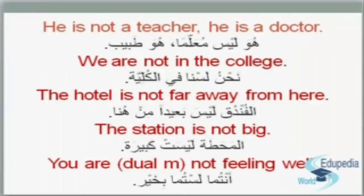Now let's see some sentences and we will try to translate them together from English to Arabic. The first one: he is not a teacher, he is a doctor. 'He' in Arabic is هو, he is not is هو ليس. Teacher is معلّم, but if the noun comes after ليس it ends with تنوين الفتح — double فتح — so it becomes معلّمًا. He is not a teacher, he is a doctor: هو ليس معلّمًا، هو طبيب.